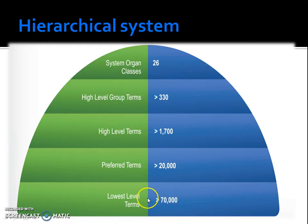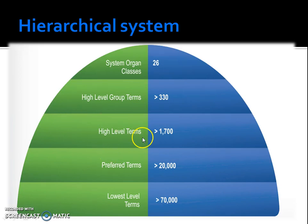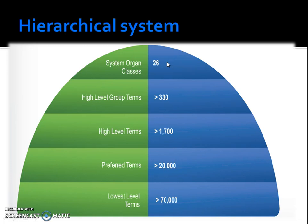We are going from a general outlook to a more specific outlook. There are over 1,700 related preferred terms grouped into high level terms, based upon anatomy, pathology, physiology, etiology, and/or function. These high level terms are in turn linked to over 330 high level group terms. Finally, these high level group terms are grouped into 26 system organ classes, which are grouped by etiology — for example infections and infestations — manifestation site — for example gastrointestinal disorders — or by purpose — for example surgical and medical procedures. There is also a system organ class accounting for social circumstances.